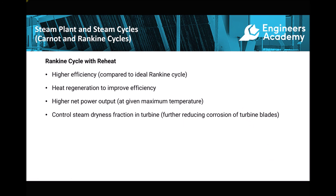Advantages of using reheat or multiple reheat include higher efficiencies compared to the ideal Rankine cycle — though never as high as the Carnot cycle, which represents the absolute maximum efficiency. We can also make use of heat regeneration to improve efficiency. A higher net power output is achievable at a given maximum temperature because we expand the steam multiple times. We can also control the dryness fraction of the steam in the turbine, further reducing the effects of corrosion on the turbine blades.